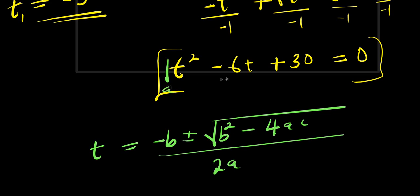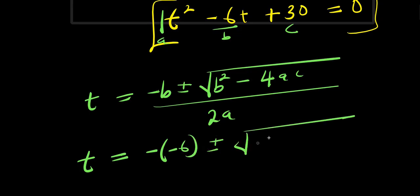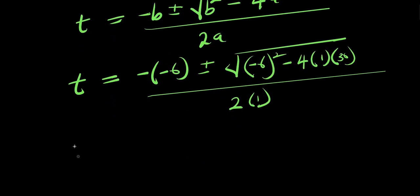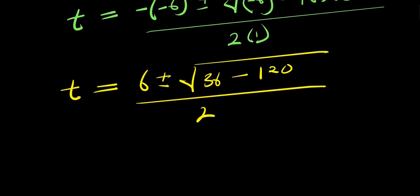Simplifying: t equals 6 plus or minus the square root of 36 minus 120, divided by 2. That gives us 36 minus 120 equals negative 84 under the square root. So t equals 6 plus or minus square root of negative 84, divided by 2. We can write square root of negative 84 as square root of negative 1 times square root of 84, which gives i times the square root of 84.